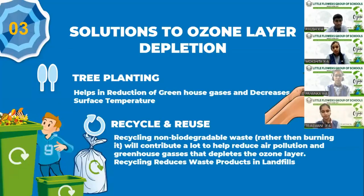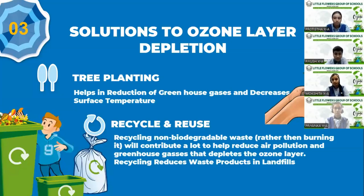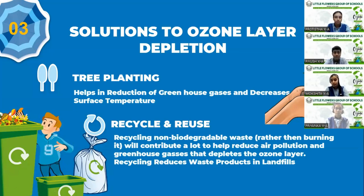So, this was about ozone layer depletion. Now, what can we do to prevent it? There are many solutions to prevent ozone layer depletion. The first and most popular solution is tree planting. It helps in the reduction of greenhouse gases and also decreases the surface temperature. The second solution is recycle and reuse. Recycling non-biodegradable waste will contribute a lot to help reduce air pollution and greenhouse gases that deplete the ozone layer, and recycling also reduces waste products in landfills.